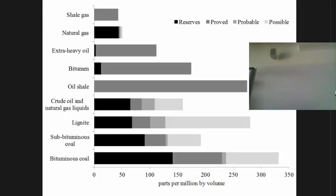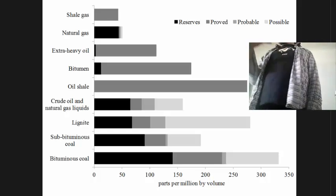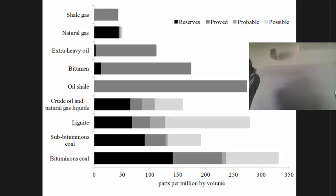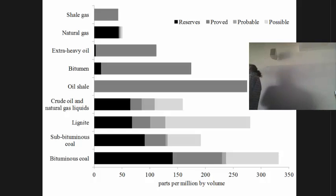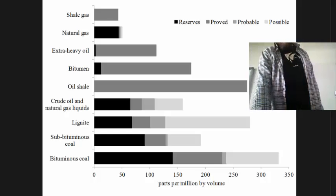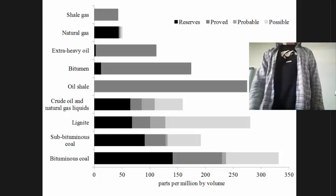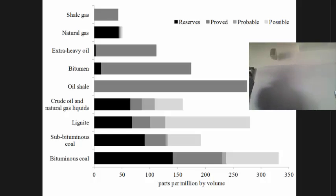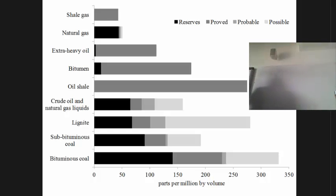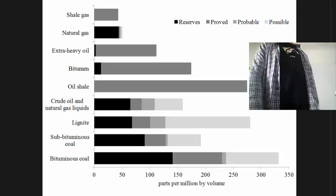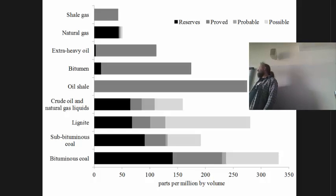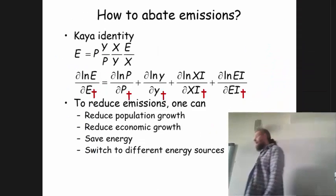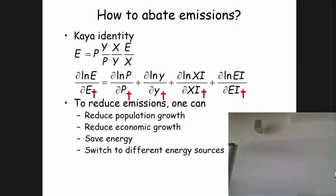All of this suggests two things: if we want to, we can make the planet a whole lot warmer. And it immediately suggests that what matters for the future of the climate is not conventional oil and gas — we'll run out of that within your lifetime — but what will replace it. If it's coal, we're in deep trouble. If it's something else, we may have a much cooler climate.